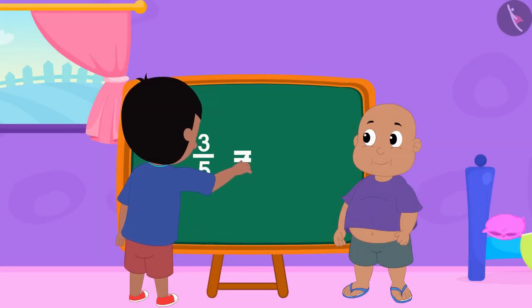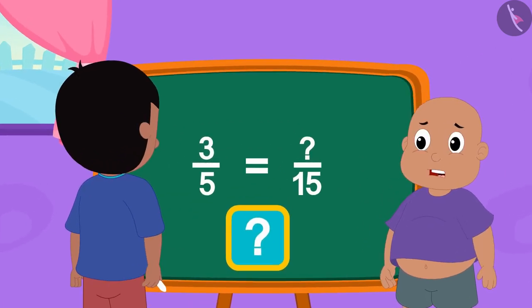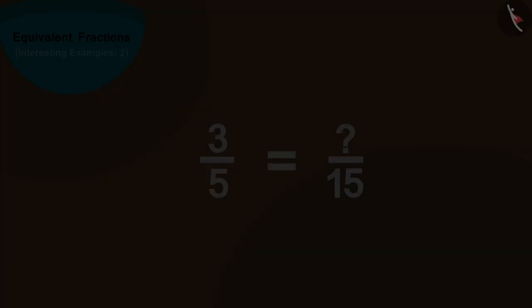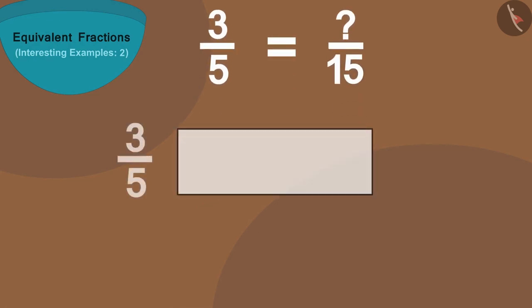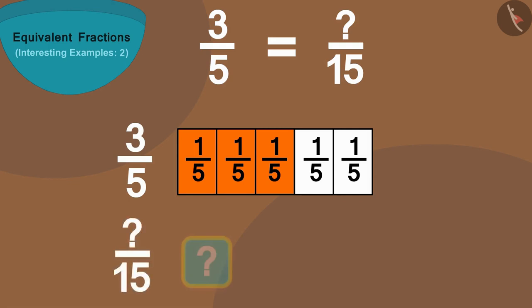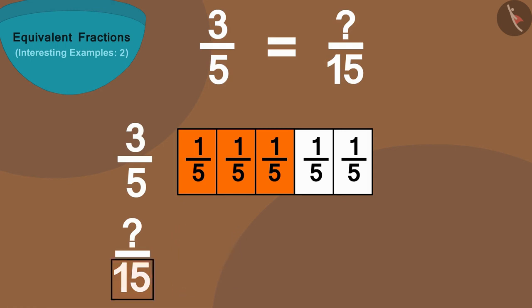This is Raju's next fraction. Children, can you find this fraction? Let's find it using a different shape. We can show this fraction by dividing a strip into five equal parts and coloring three parts in it. Now, how many parts are there in its equivalent fraction? 15.